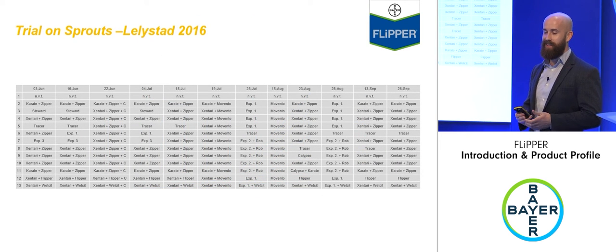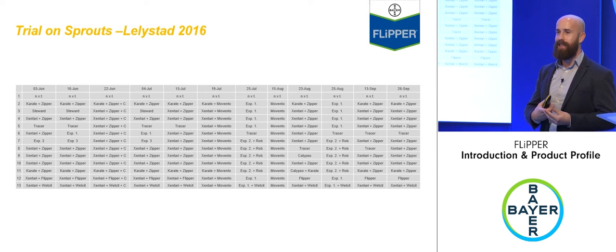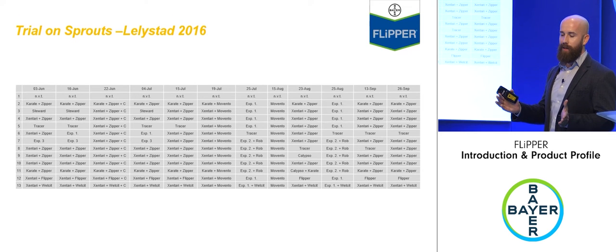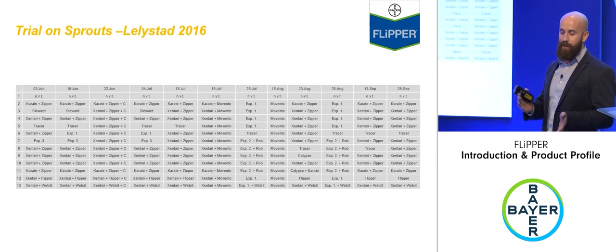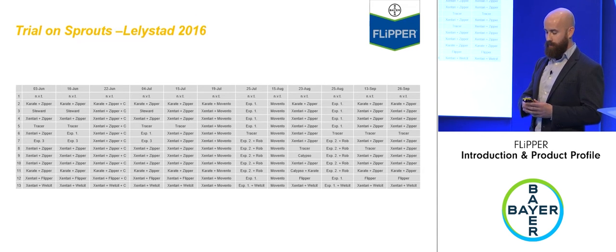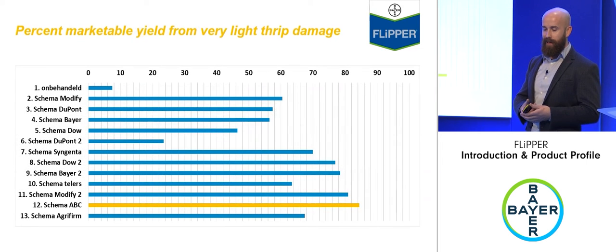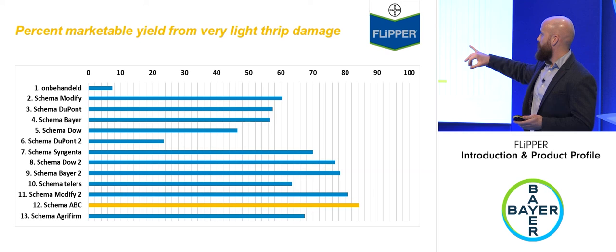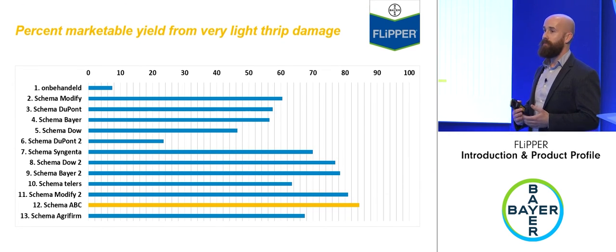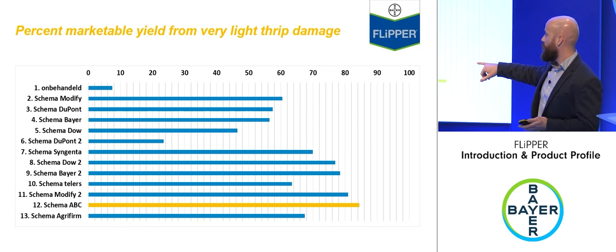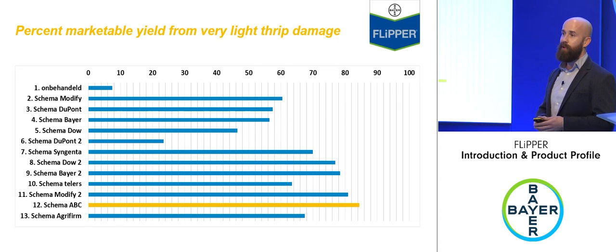A 2016 Netherlands trial on thrips in sprouts invited manufacturers to put forward their recommended programs. Treatment number 12 was the Flipper program. While Dupont and Bayer programs all did a reasonable job defending marketable yield, the Alpha Bio control scheme — number 12 — was by far the highest-performing program in the trial.